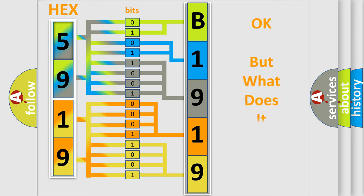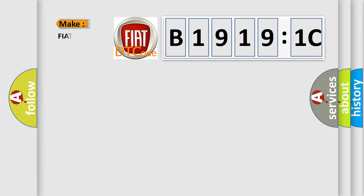The number itself does not make sense to us if we cannot assign information about what it actually expresses. So, what does the diagnostic trouble code B19191C interpret specifically for FIAT car manufacturers?